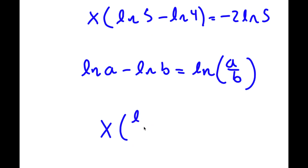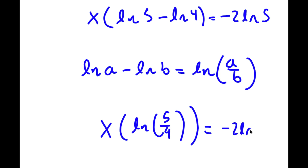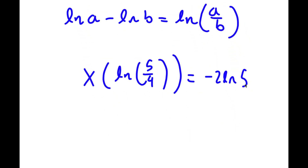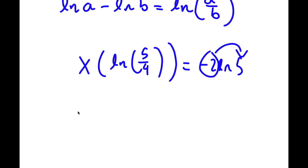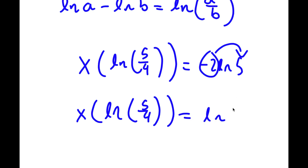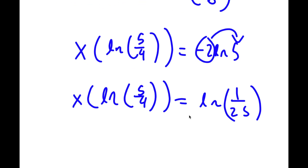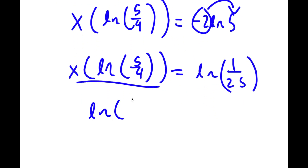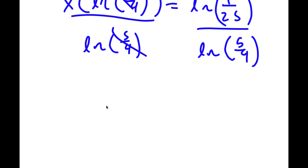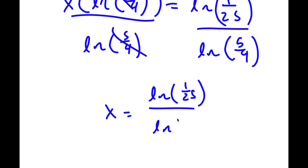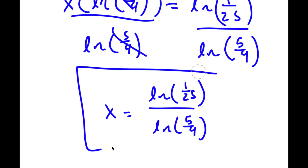So I have x times ln of 5 over 4 equals negative 2 times ln 5. Now, negative 2 times ln 5 — moving the coefficient back as an exponent — gives ln 5 to the power of negative 2, which is the same thing as ln of 1 over 25. So dividing both sides by ln of 5 over 4, I get x equals ln of 1 over 25, divided by ln of 5 over 4. So this is my answer.